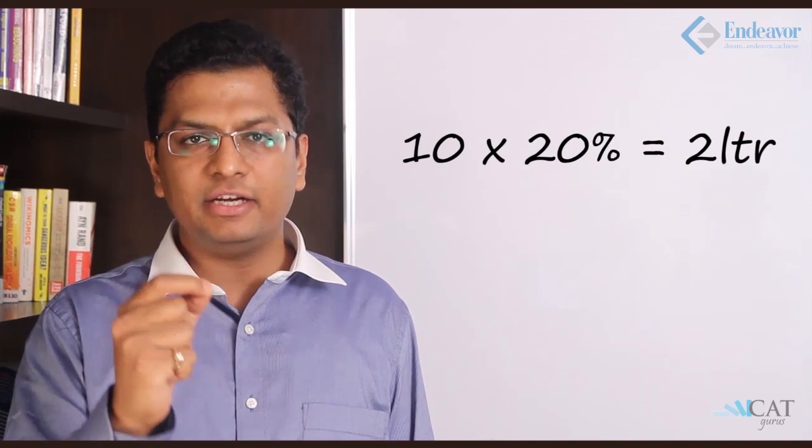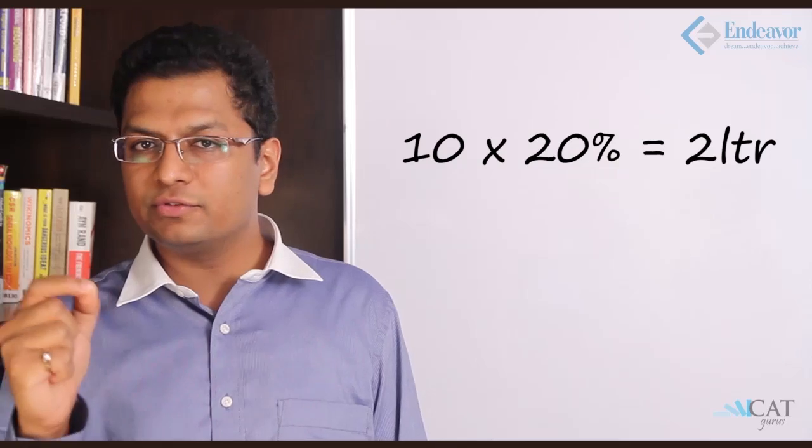A 10 liter solution which has 20% sugar. So it should contain how much? 20% sugar. 10 into 20% is 2 liters of sugar in it. But the question is saying that we need to evaporate water to make it 40% sugar. Why evaporate water?